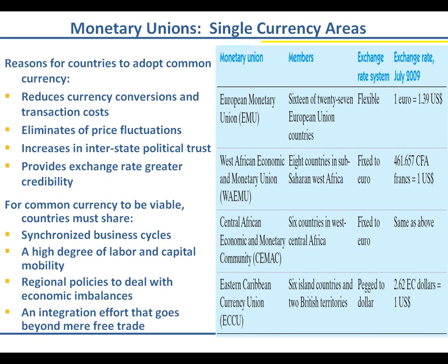A key rationale behind the monetary union was market power — the EU needed the collective market power to be competitive in the global economy. It's worth remembering that not long ago, EU member states were fighting each other in the world wars. Other organizations reflect similar logic: NAFTA in North America, and oil cartels like OPEC, where countries collaborate to address global economic demand for oil together, all represent efforts to gain market power through cooperation.